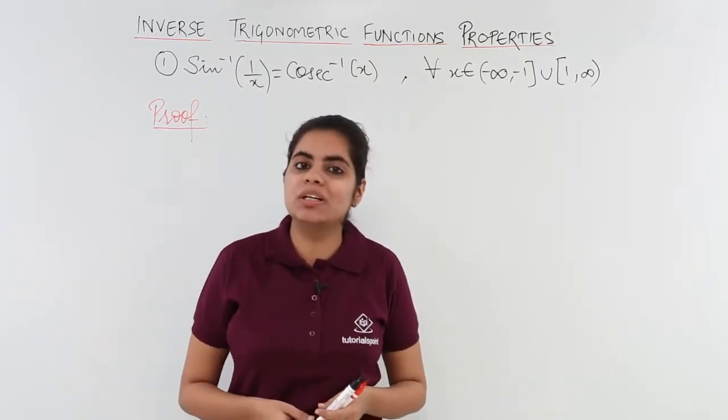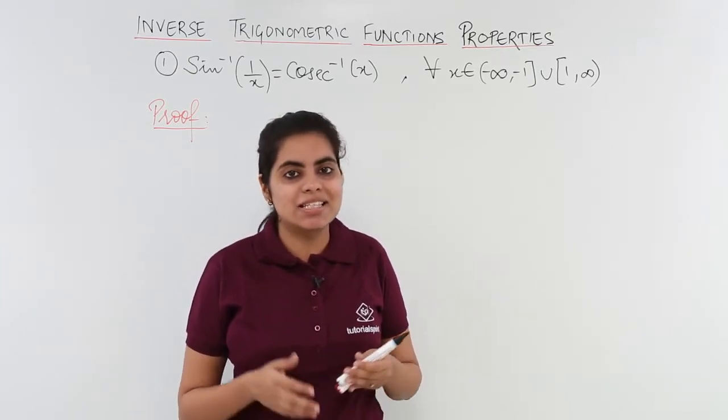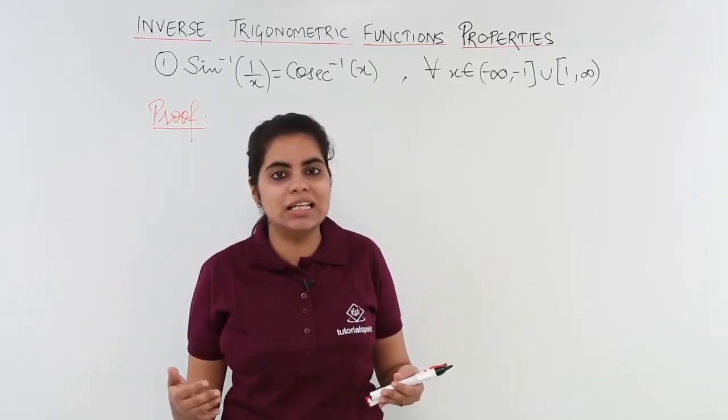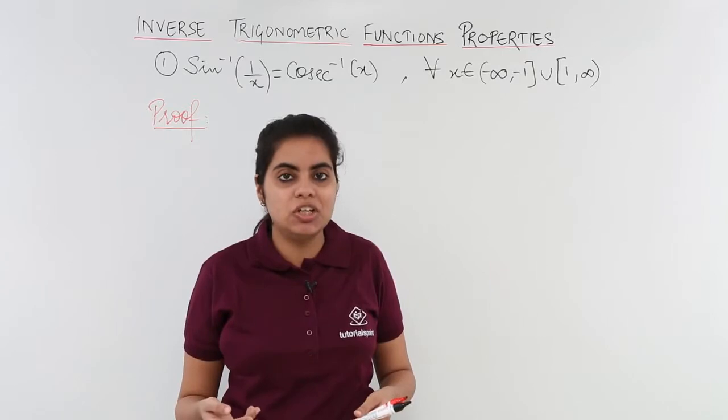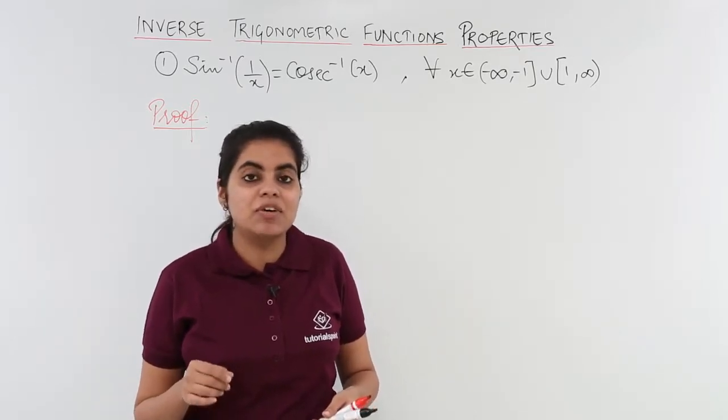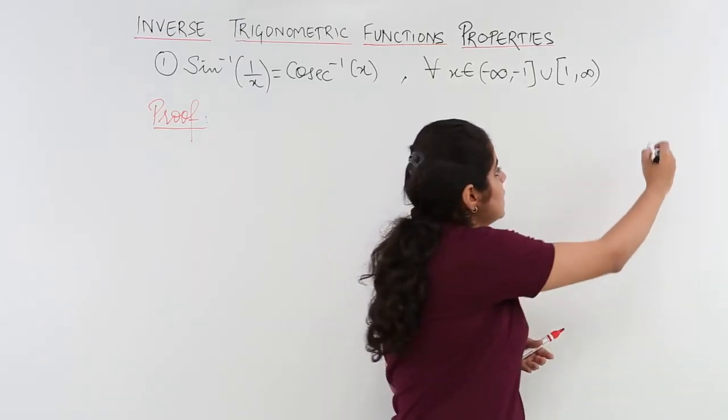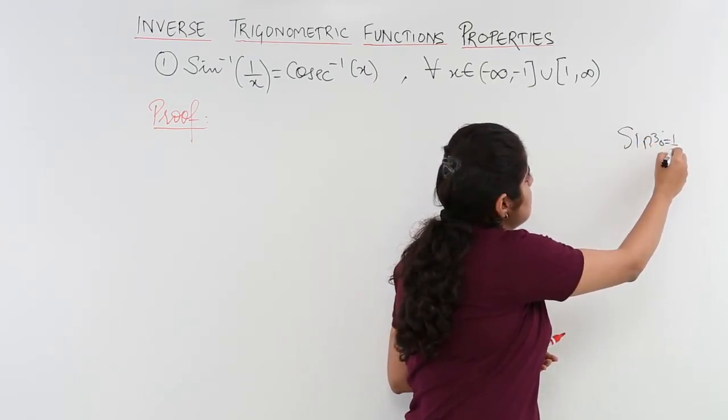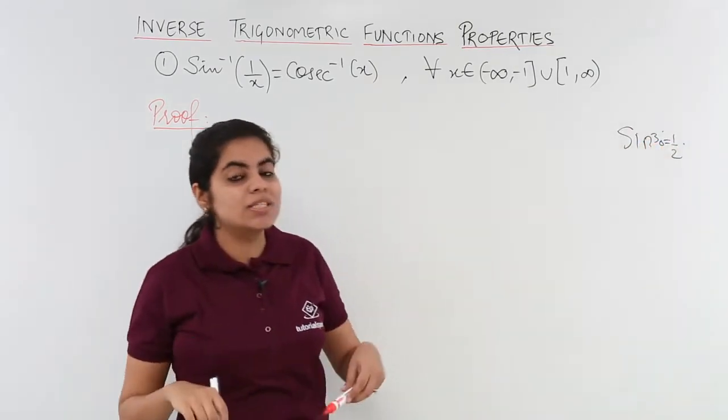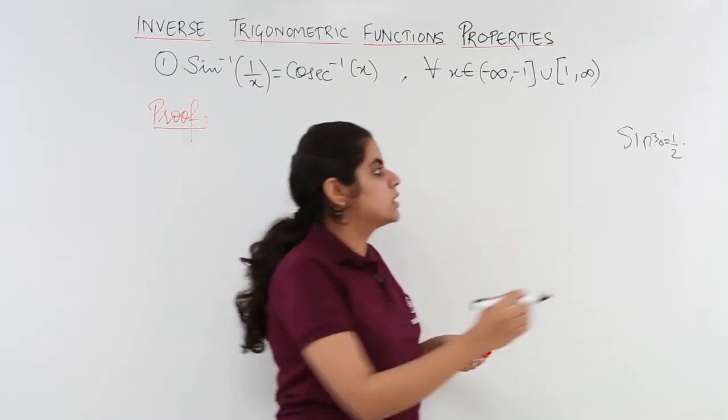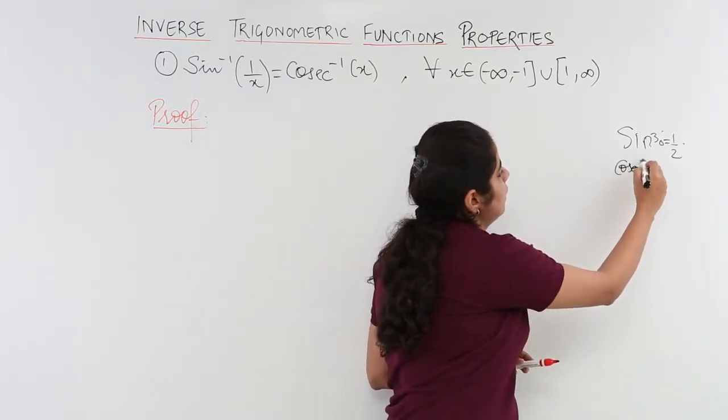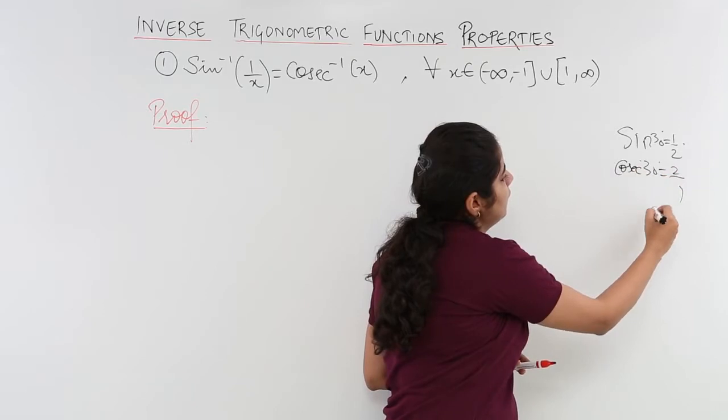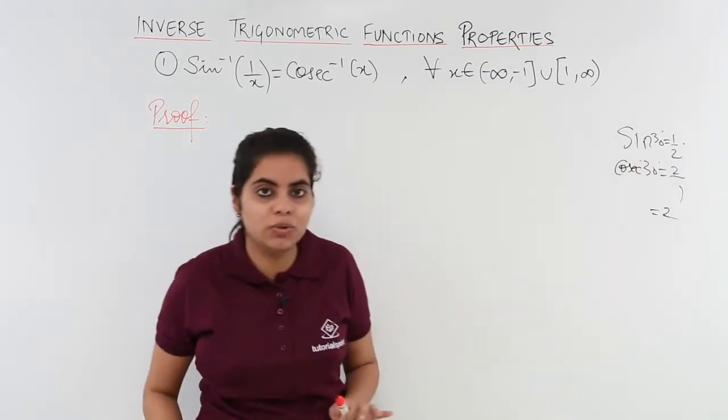We already know from our junior classes knowledge that sin and cosecant are basically the reciprocals of each other. That means if sin 30 degrees is equal to 1 upon 2, cosecant 30 degrees will be 2 upon 1 that is 2. We already know this.